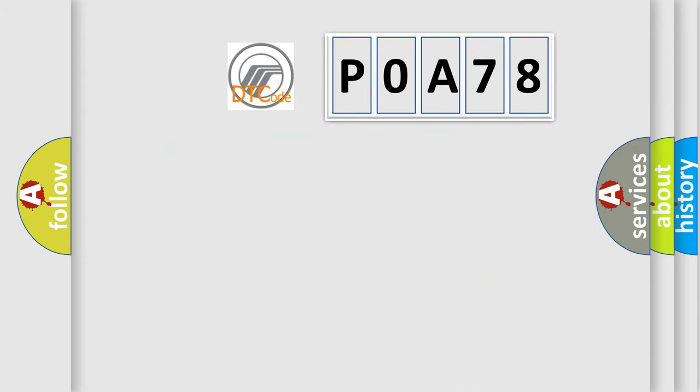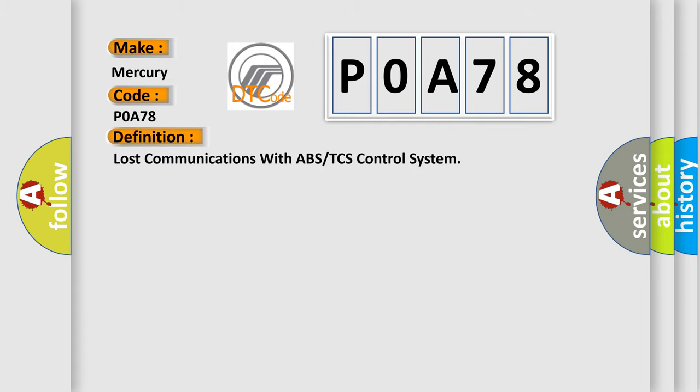The number itself does not make sense to us if we cannot assign information about it to what it actually expresses. So, what does the diagnostic trouble code P0A78 interpret specifically for Mercury car manufacturers? The basic definition is lost communications with ABS or TCS control system.